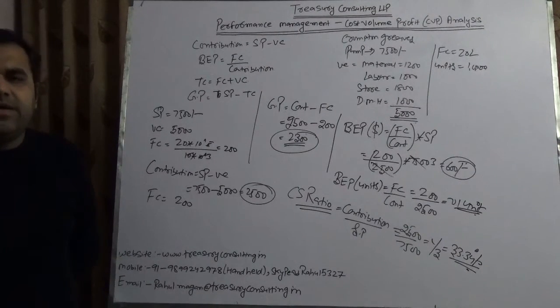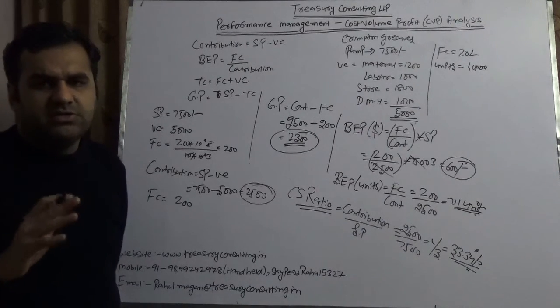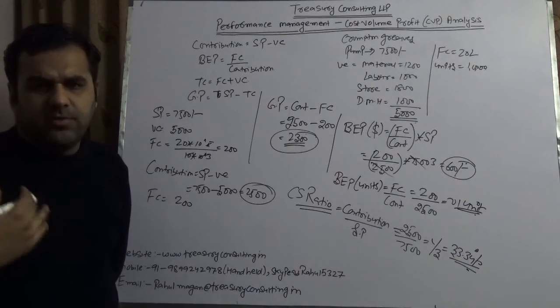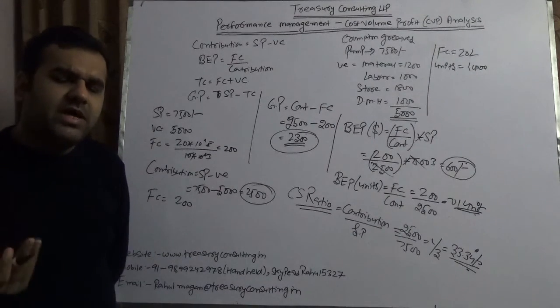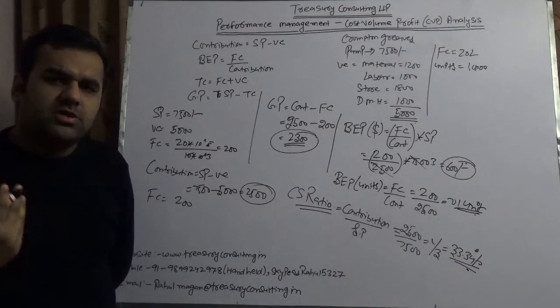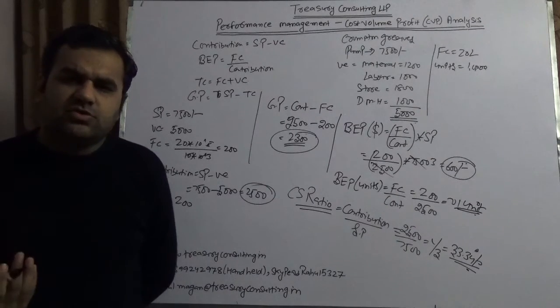One should understand that management accounting is all about costing. Management accounting is far different than financial accounting. Financial accounting is all about bookkeeping. On the other hand, management accounting is all about how to calculate product cost and so on.